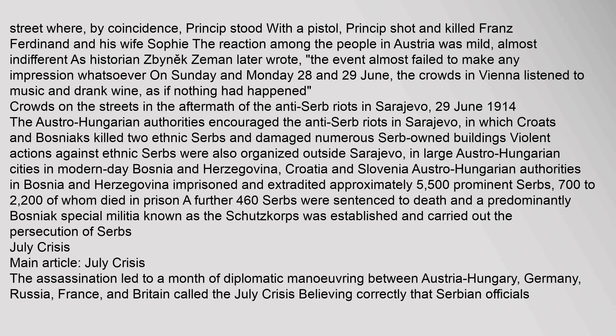The reaction among the people in Austria was mild, almost indifferent. As historian Zabinik Ziemann later wrote, the event almost failed to make any impression whatsoever; on 28 and 29 June, the crowds in Vienna listened to music and drank wine, as if nothing had happened. The Austro-Hungarian authorities encouraged anti-Serb riots in Sarajevo, in which Croats and Bosniaks killed two ethnic Serbs and damaged numerous Serb-owned buildings. Austro-Hungarian authorities in Bosnia and Herzegovina imprisoned and extradited approximately 5,500 prominent Serbs, 700–2,200 of whom died in prison. A further 460 Serbs were sentenced to death, and a predominantly Bosniak special militia known as the Schutzkorps was established and carried out the persecution of Serbs.